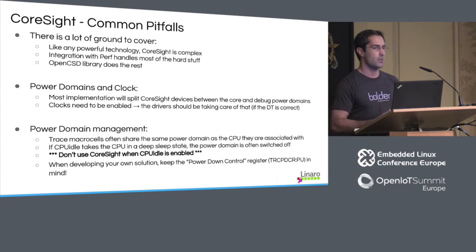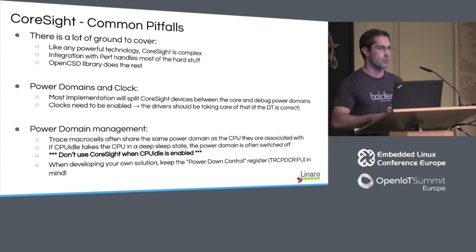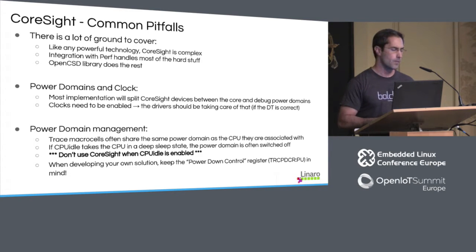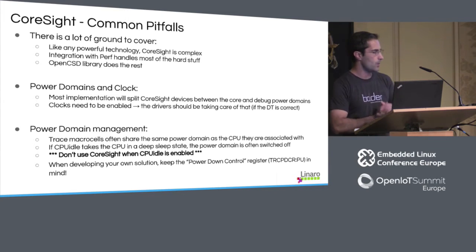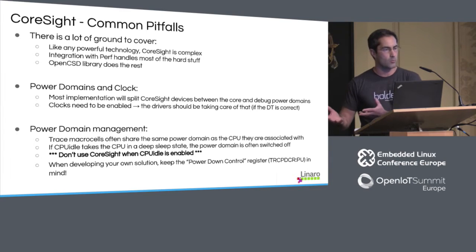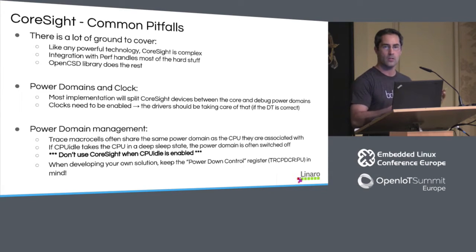There are two things to really keep in mind when looking at Coresight: clocks and power domains. Coresight blocks are found on the AMBA bus, so your APB clock must be present in the device tree and manageable using the clock API. The drivers will do the right thing — they'll enable the clock when they need access to the IP block and switch it off after. The harder part is power domains, where IP blocks are split across different power domains. Typically the funnel, replicators, and sink end up in the debug power domain, whereas the tracers share the same power domain as the CPU they are coupled with — usually a cluster power domain.